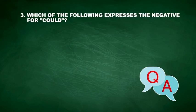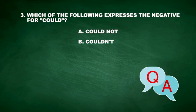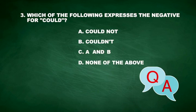Question 3: Which of the following expresses the negative for 'could'? A. Could not. B. Couldn't. C. A and B. D. None of the above. The correct answer is C. 'Could not' and 'couldn't' are the negatives for 'could.'